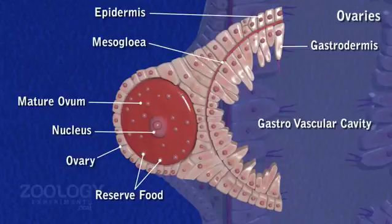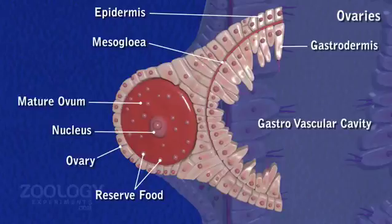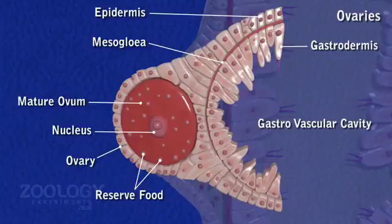The oocyte undergoes two maturation divisions, resulting in the production of two polar bodies and reduction of chromosomes to the haploid number. The mature egg or ovum is a large spherical mass full of yolk granules. One ovary usually contains a single ovum, but rarely two or more are found. When an egg is ripe, the epidermis over it ruptures and withdraws to form a cup-like receptacle containing the exposed egg. The ovum is not set free at once but remains attached to the parent by a large base.